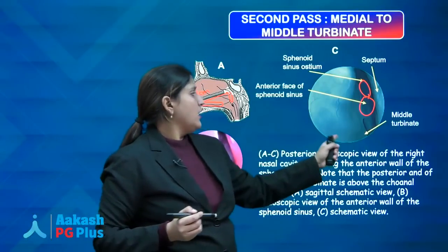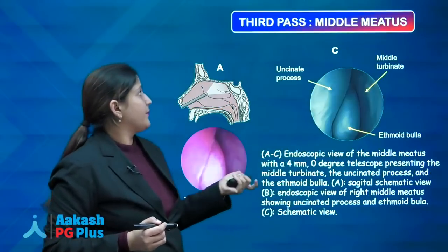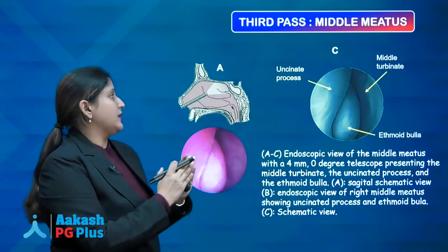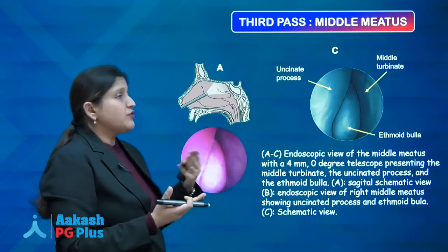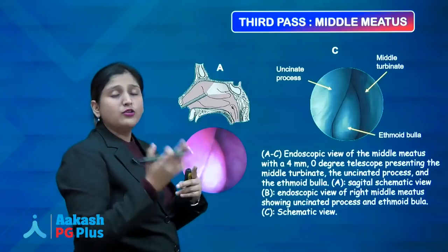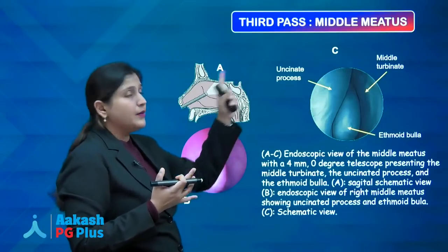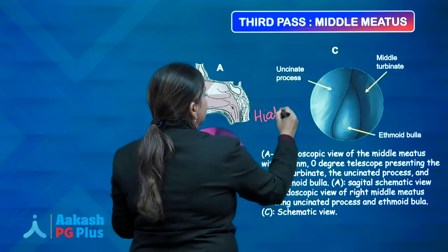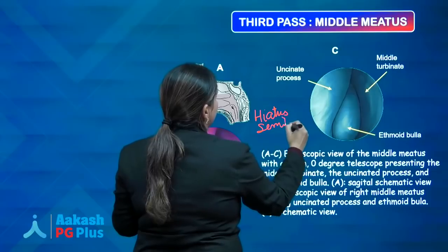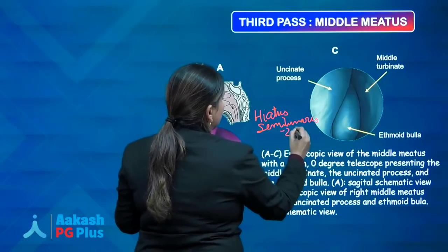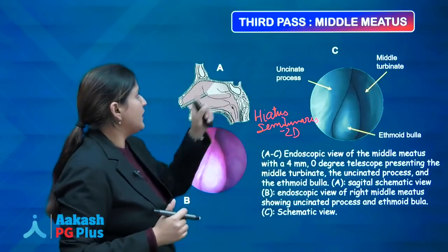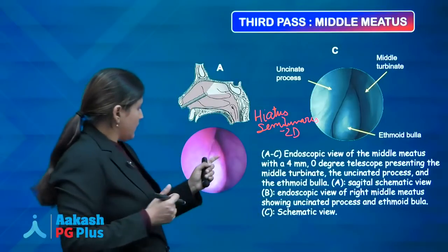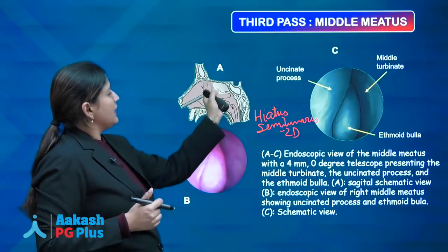In the endoscopic picture, you can identify the middle turbinate, sphenoid, and septum. In the third pass, going lateral to the middle turbinate, you enter the middle meatus. Here you see the openings of the ethmoid sinus, frontal sinus, and maxillary sinus — they drain through the hiatus semilunaris, a 2D structure. The visible structures are the middle turbinate, ethmoidal bulla, and the uncinate process.